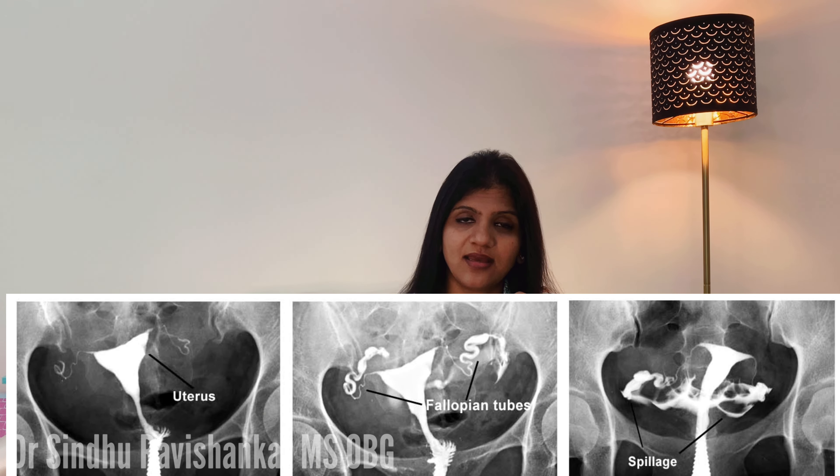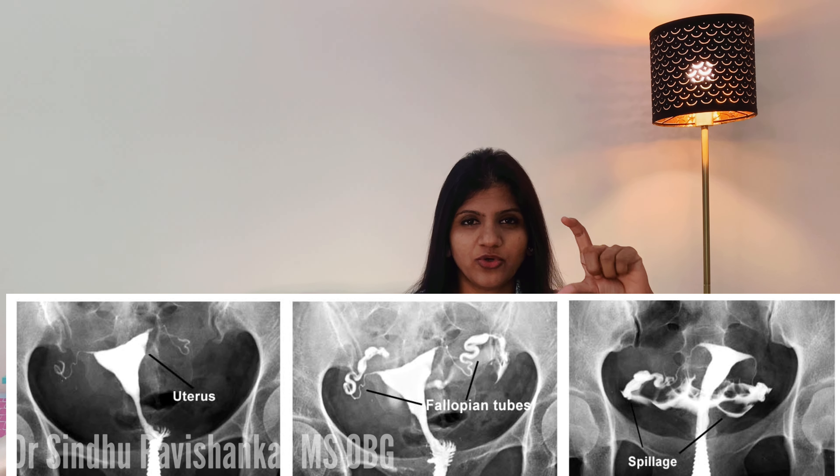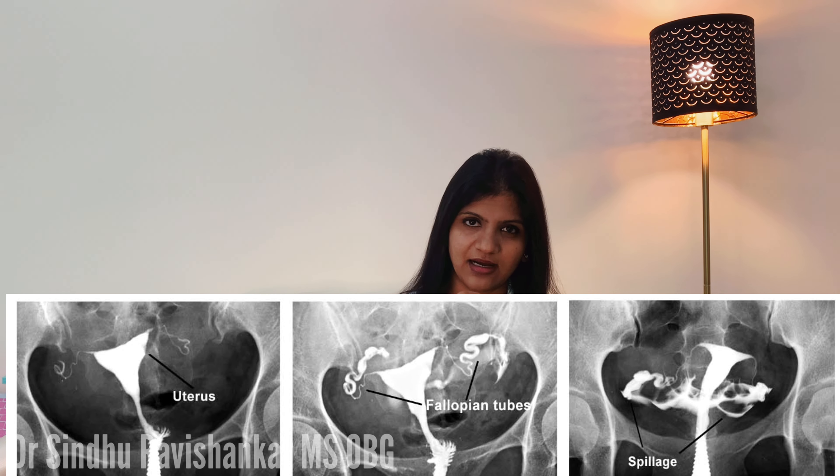If you want to check for tubal blockage, you generally don't need to test right away. You should be under strict supervision of a doctor. During the procedure, we push dye into the uterus. Our uterus volume is about 5-6 ml, so we introduce 5-6 ml of fluid into the uterus.